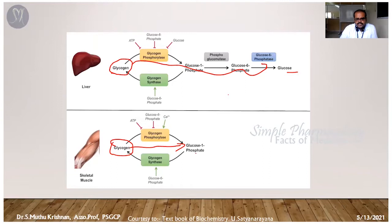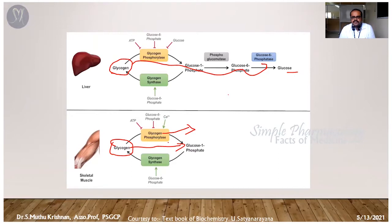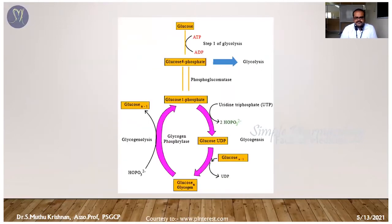The important enzyme responsible for glycogenolysis is glycogen phosphorylase. This enzyme is responsible for the breakdown of glycogen into glucose phosphate molecules, which are then used for energy utilization.